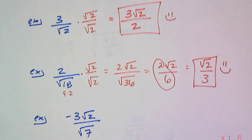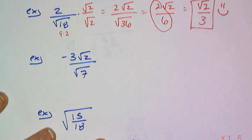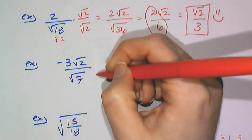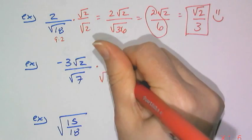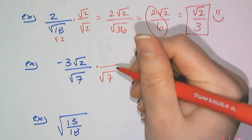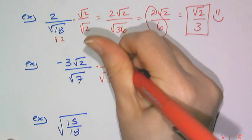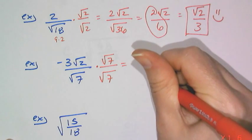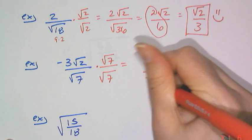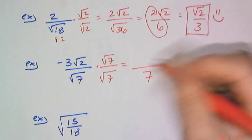All right, now let's look at this next example, negative 3 root 2 over root 7. This is very straightforward, 7's prime, so I have to multiply it by root 7 over root 7, which gives me my denominator of 7. And then what do I get in my numerator?